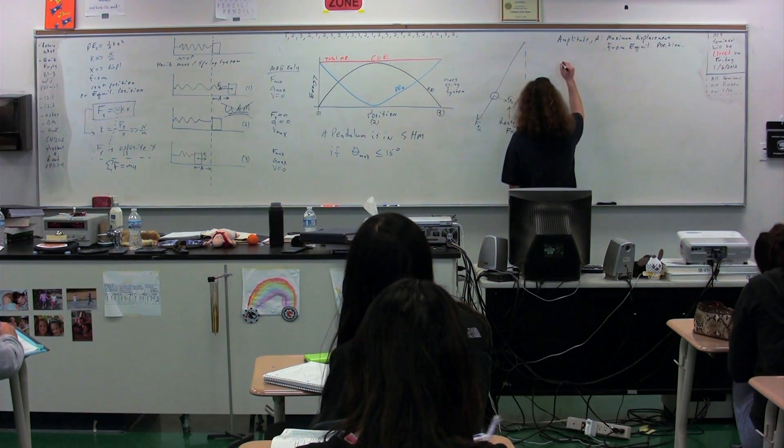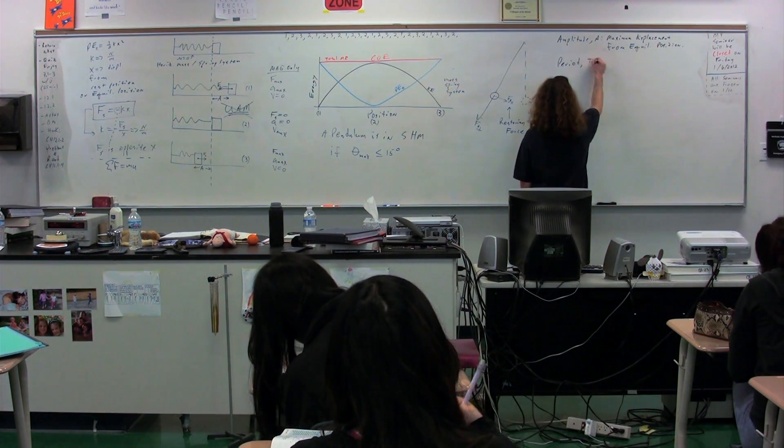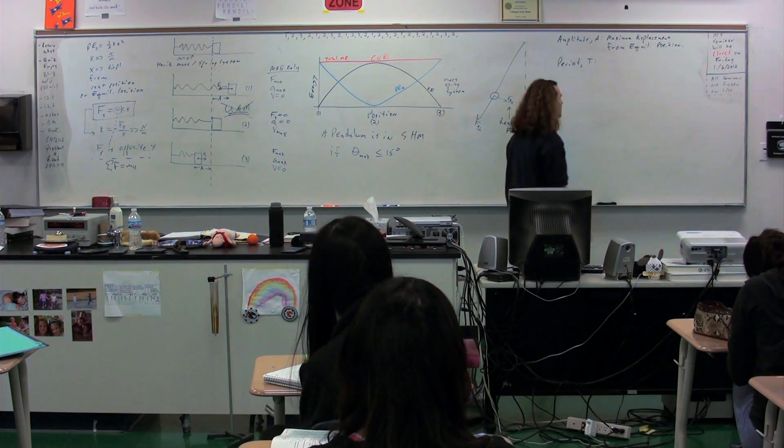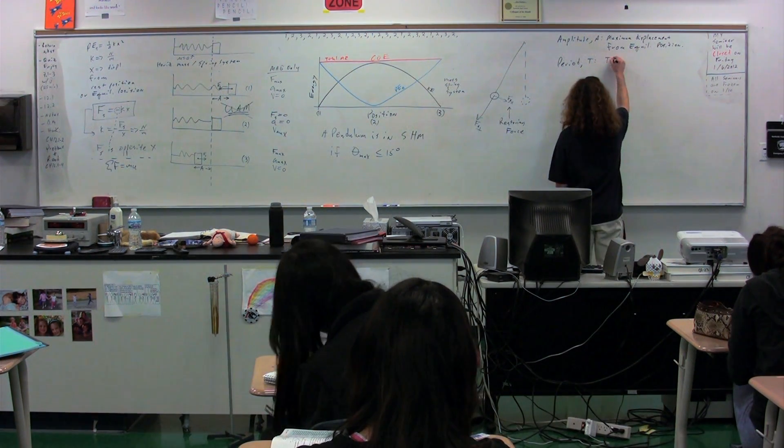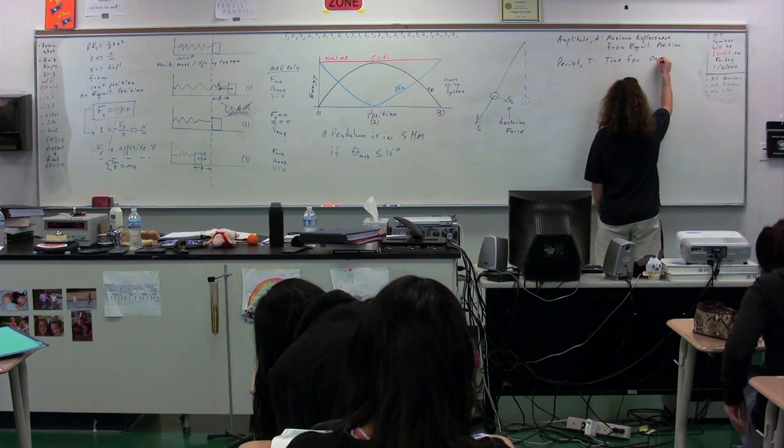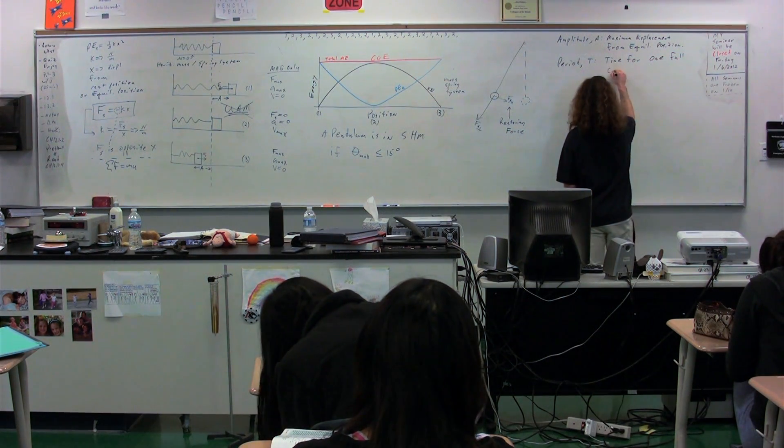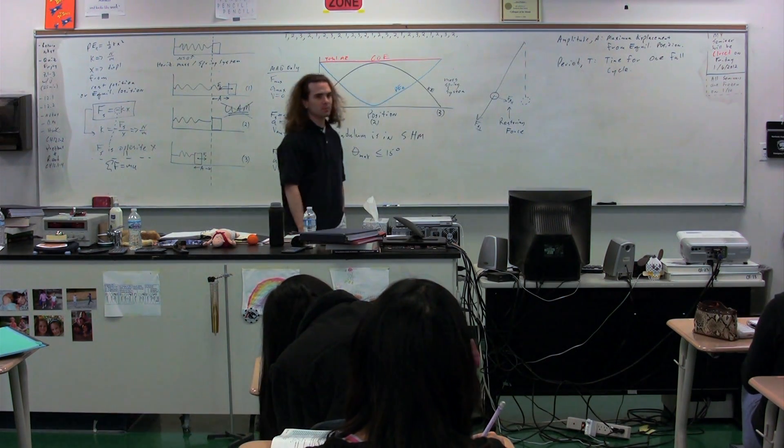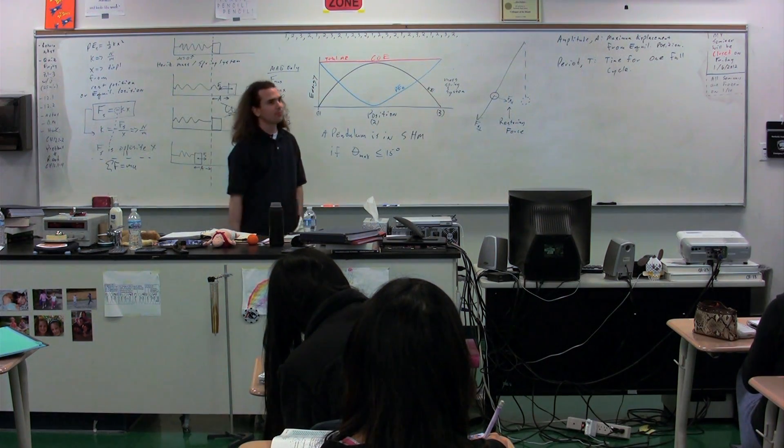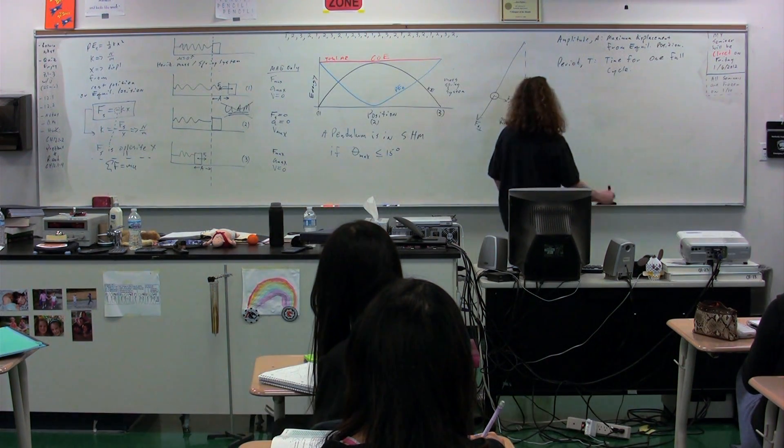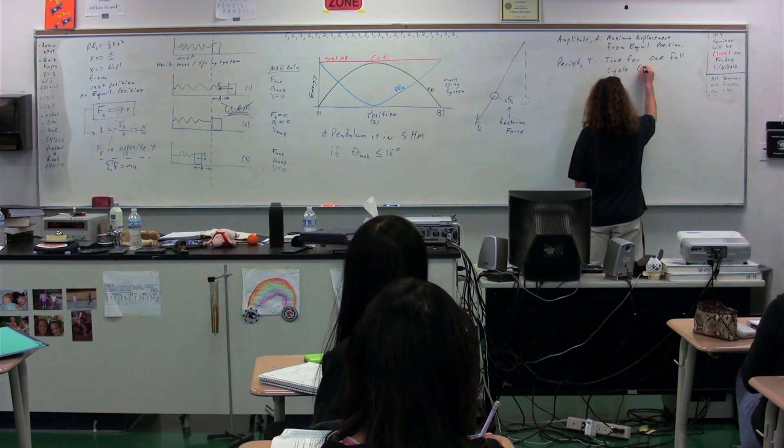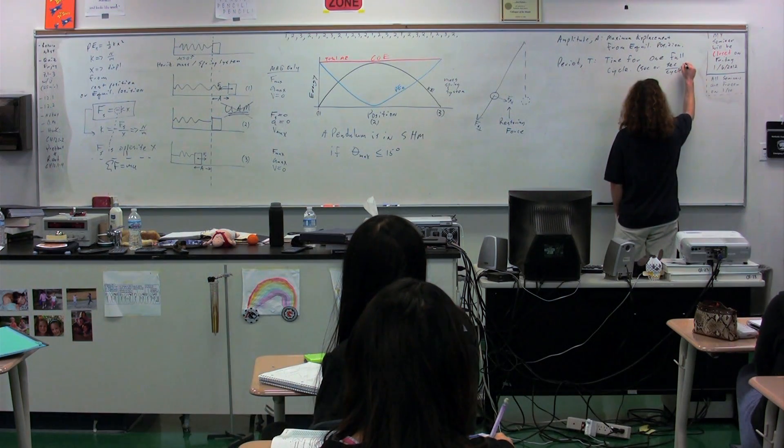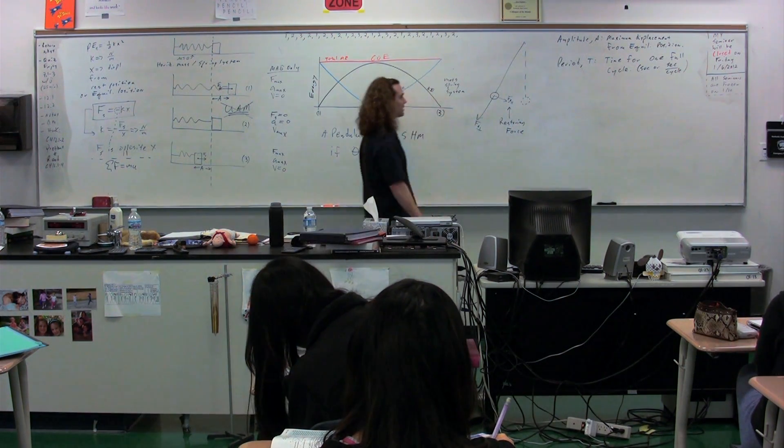We also need to define the period. The symbol for period is a capital T. Notice not lowercase, it is a capital T. And the period is defined as the time for one full cycle. What are the dimensions for the period, please? It can be in seconds, or you will also see it in seconds per cycle. They're actually one and the same.